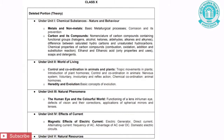Moving on to the next subject, Science for Class 10. For the Theory Part, Unit 1 is Chemical Substances — Nature and Behaviour. The first chapter is Metals and Non-metals. The topics removed are Basic Metallurgical Processes, Corrosion and Its Prevention.